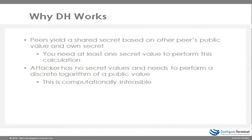The way Diffie-Hellman works is as follows. The peers — in other words, the two devices involved in a VPN — can create a shared secret key based on the other peer's public value and their own secret. If you and I are going to set up a VPN and we need to create a shared secret key between us, by using complicated mathematics we can create a shared secret securely, without other people being able to work out what that key is.